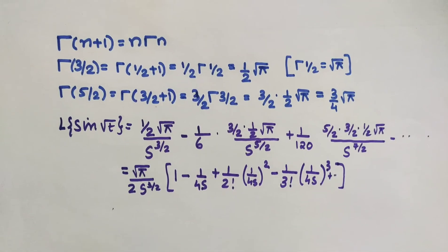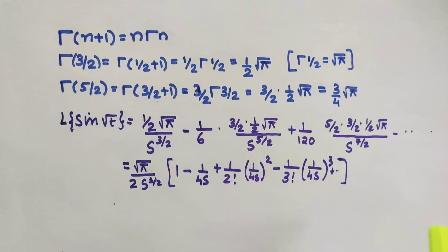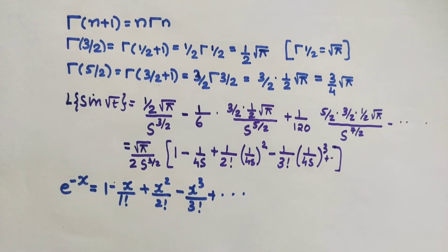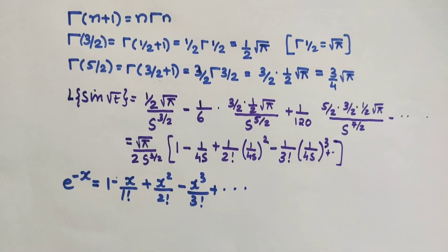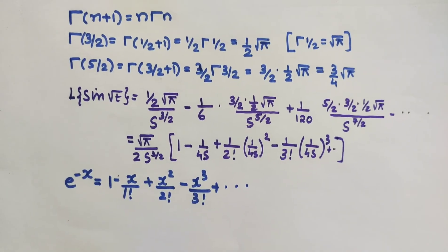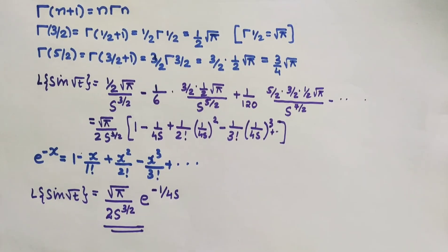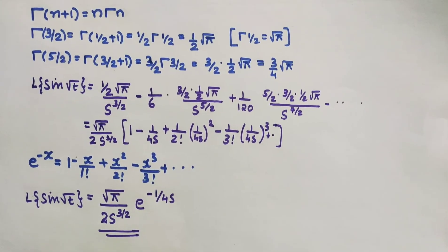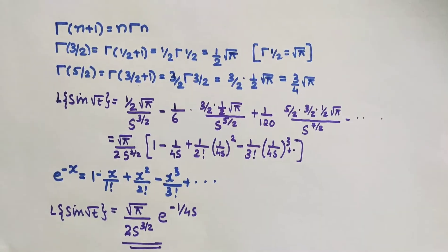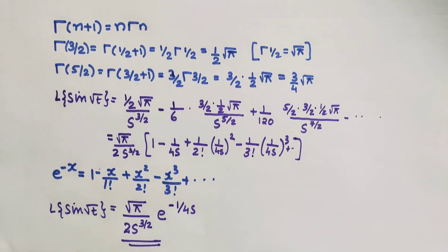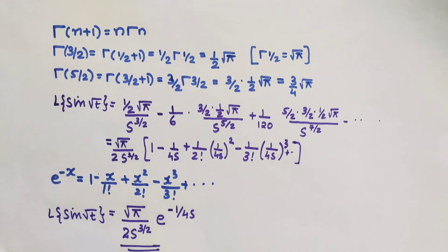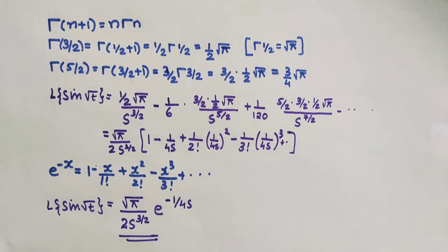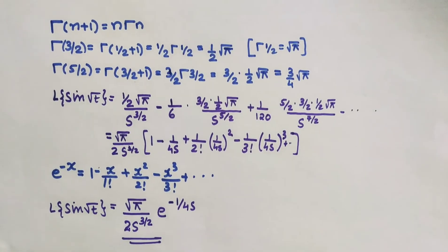The Taylor series expansion of e^(−x) = 1 − x/1! + x²/2! − x³/3! and so on. The terms inside the bracket — 1 − 1/(4s) + (1/2!)·(1/(4s))² − ... — match the Taylor series of e^(−x) with x = 1/(4s).